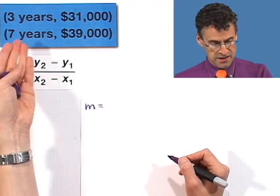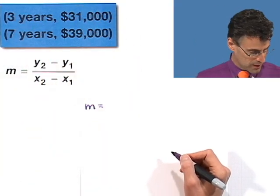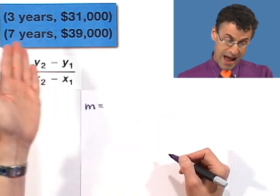So at different times, that will determine the value of the painting, and so the y is the dependent. And that's why, if you look back here, you see that I've got the time being x and the y representing the value at that time.